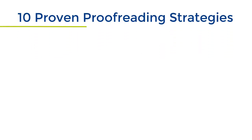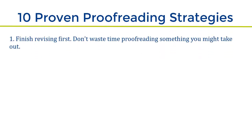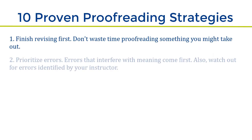First and foremost, make sure that you have finished revising. You don't want to go through and fix mistakes for something that will be rewritten anyway. Prioritizing errors can be useful. Go through your paper once, looking for the most important mistakes, particularly those that may have been identified by your professor, or things that make your meaning difficult to understand.